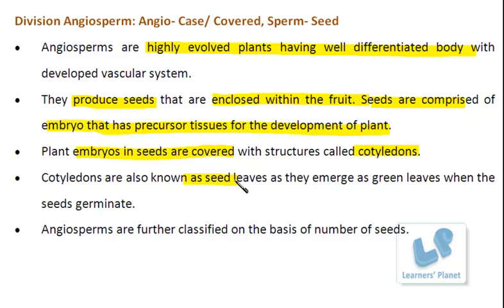Cotyledons are also known as seed leaves. When seeds germinate for the first time, cotyledons emerge as green leaves — the two leafy-like structures that open up during germination are the cotyledons developing. Depending on whether seeds have a single cotyledon or two cotyledons, angiosperms are further sub-classified as monocots and dicots.